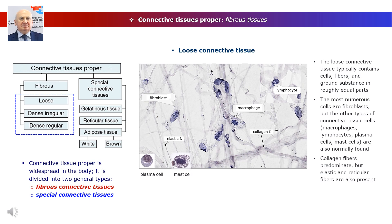Loose connective tissue is common, forming a layer beneath the epithelial lining of many organs and filling the spaces between fibers of muscle and nerve. Also called areolar tissue, the loose connective tissue typically contains cells, fibers, and ground substance in roughly equal parts. The most numerous cells are fibroblasts, but macrophages, lymphocytes, plasma cells, and mast cells are also normally found. Collagen fibers predominate, but elastic and reticular fibers are also present. Loose connective tissue has a delicate consistency — it is flexible and not very resistant to stress.